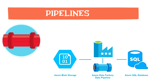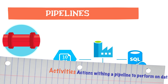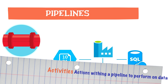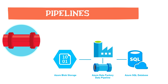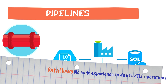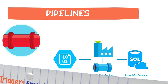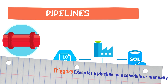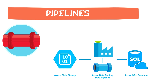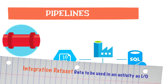Activities define actions within a pipeline to perform on data, such as copying data, running a notebook, running a SQL script, or other operations on your data. Data flows are a specific kind of activity that provide a no-code experience for data transformation using Synapse Spark under the covers. A trigger executes a pipeline — it can be run manually or automatically on a particular schedule, tumbling window, or event-based. Lastly, an integration dataset is a named view of data that points or references the data to be used in an activity as an input and output, and it belongs to a linked service.